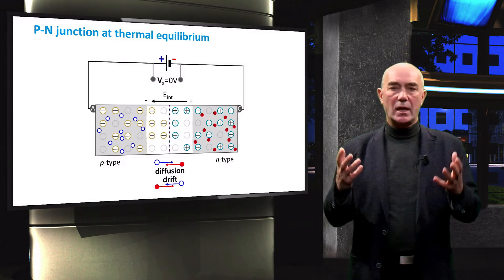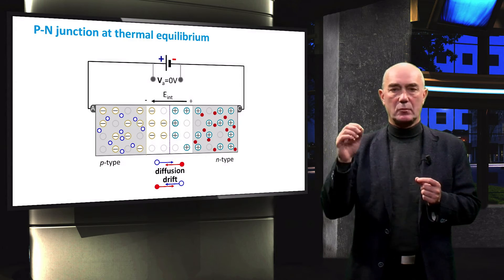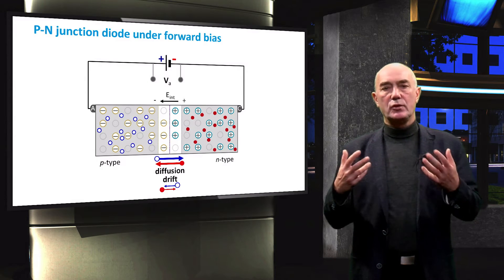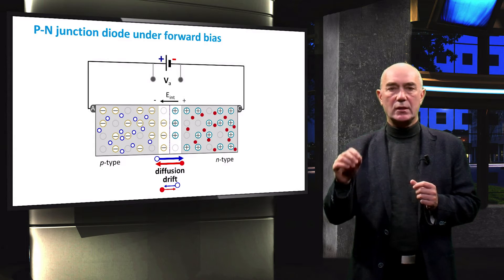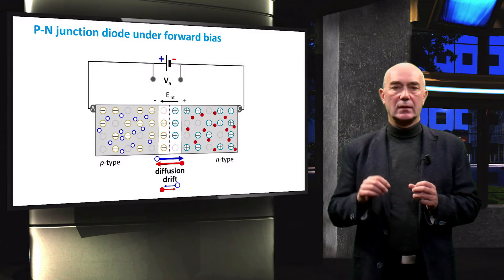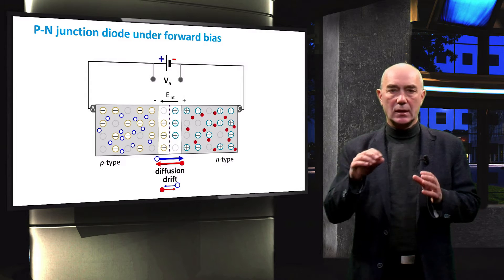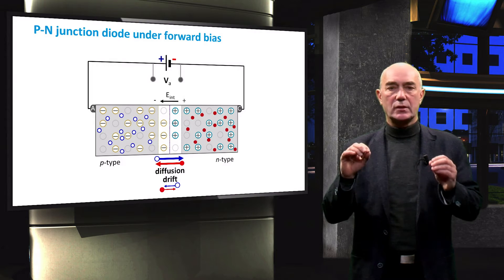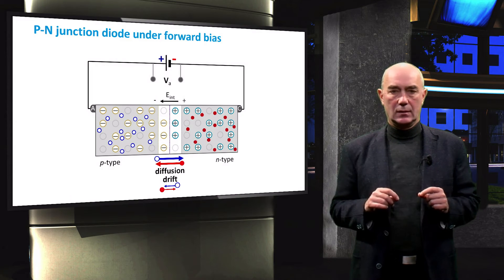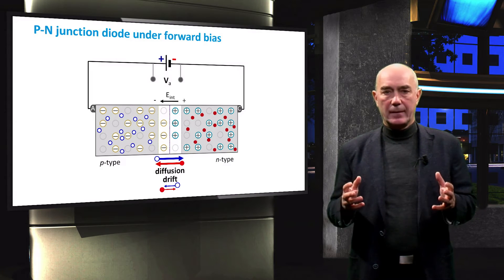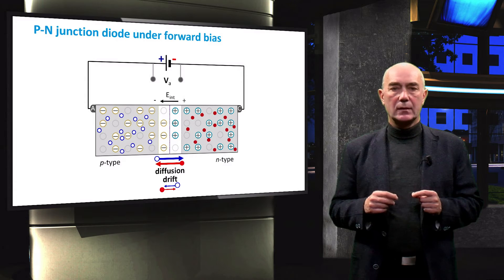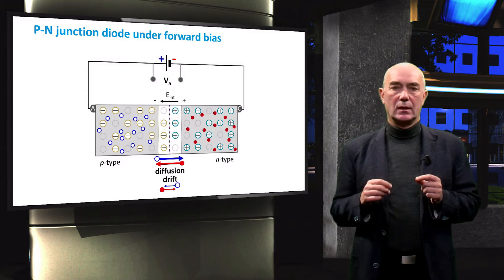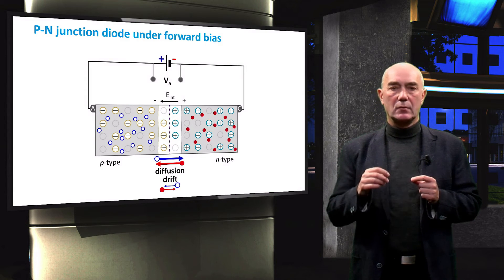Let's start ramping up the applied voltage and see what happens. When we assume that the quasi-neutral regions are conductive, the voltage applied to the diode will be distributed over the non-conductive part of the diode, which is the depletion region. You should remember that at thermal equilibrium there is a potential difference between the edges of the depletion region — the so-called built-in voltage.